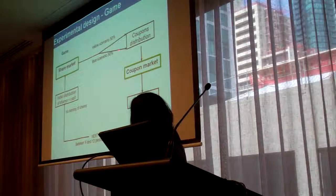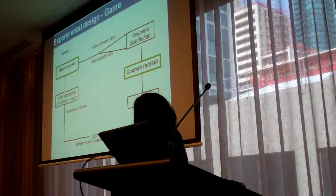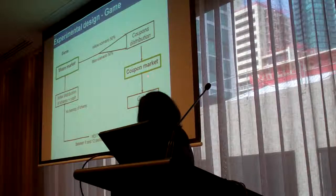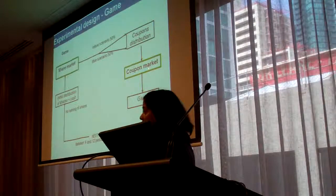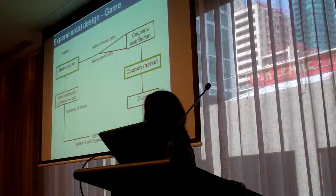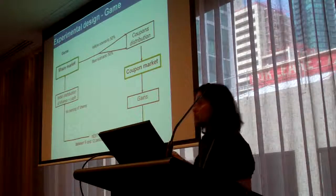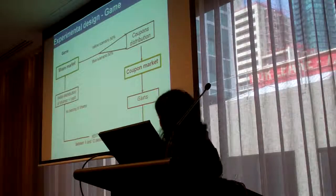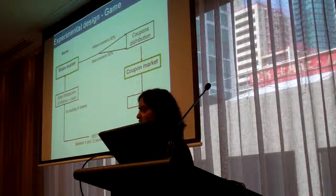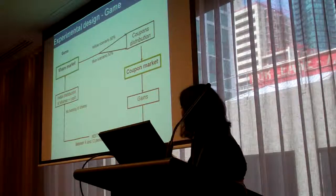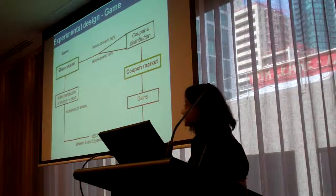Depending on which scenario you are in, you get coupons, which are fewer in the yellow scenario. Then you can go to the coupon market — that's the second, temporary market — and trade there. At the end of the period, you get to know how much profit you have made, and then you start another trading period. This goes on for a few periods — 12 periods in total.